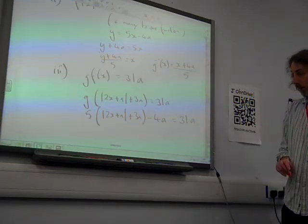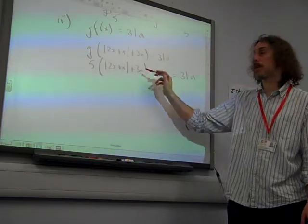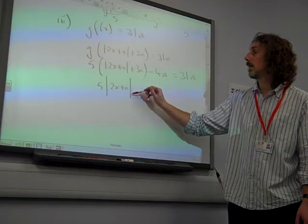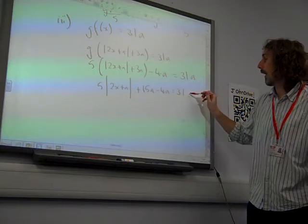We now need to deal with that whole multiplying by 5 thing. Notice the 5 is multiplying the 3a as well. That's 5 lots of the modulus of 2x plus a plus 15a minus 4a is 31a.